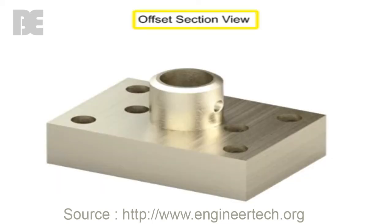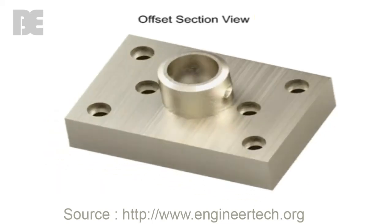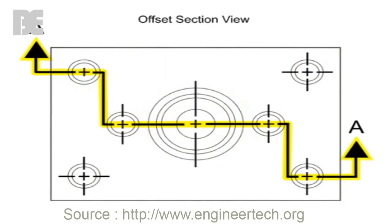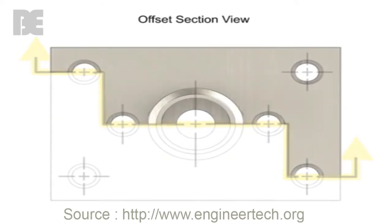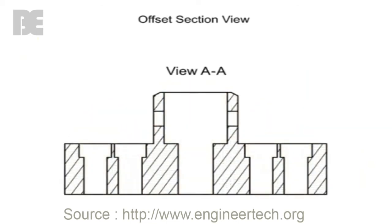An offset section results when the cutting plane line is bent to show internal features that are not in a straight line. The bends in the cutting plane are not shown in the section view. The new section view makes the internal features appear as if they are in a straight line.